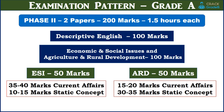For Grade A exam, Phase 2 consists of 2 papers, each of 100 marks, and you would be given 1.5 hours for each paper. The first paper is descriptive English — 100 marks with subjective answers. The second paper covers economic and social issues and agriculture and rural development, also 100 marks — 50 marks each for economic and social issues and agriculture and rural development. This is for Grade A examination only.